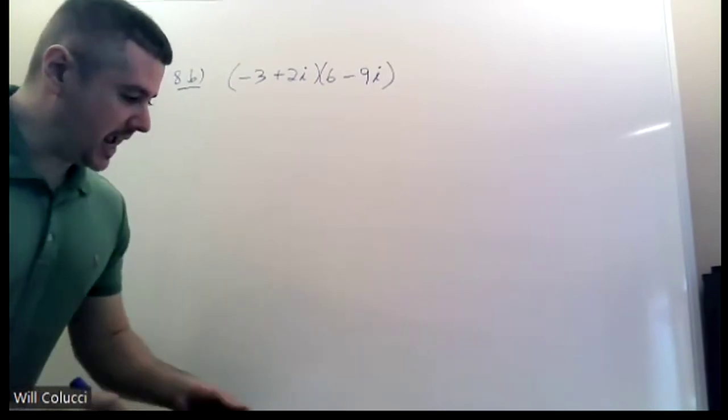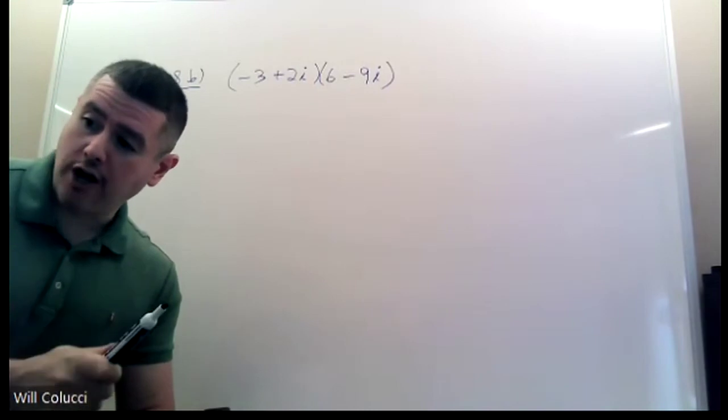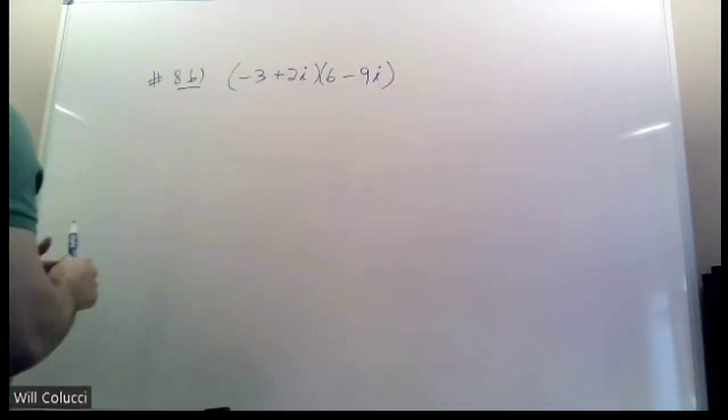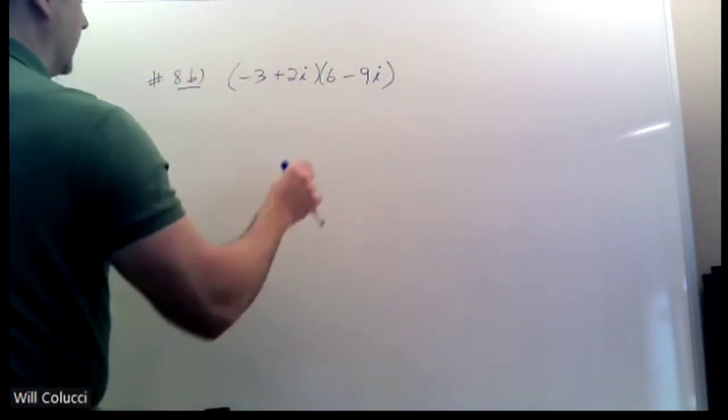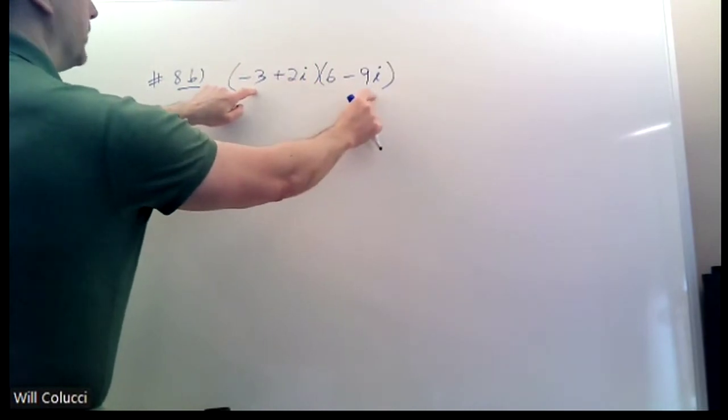This is question 8B, B as in boy, from the review. Love this question. This question is on the test. And it's almost identical to this one. It's scary how similar it is. I only changed it slightly. So, again, this is a FOIL problem with complex numbers. You have to be very careful. A plus Bi, A plus Bi.